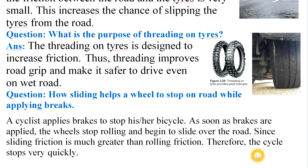The wheels stop rolling and are locked up with the brakes, and they slide over the road. Since sliding friction is much greater than rolling friction — write this with a blue marker — this large sliding friction is what brings the vehicle to a stop.